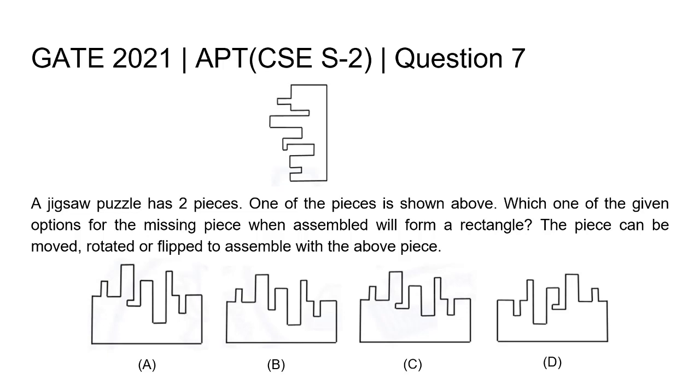So we have one piece of jigsaw puzzle and we have to find out its complement from the given option. What we can do is draw that piece from the given piece. Let's set grids for easier understanding.